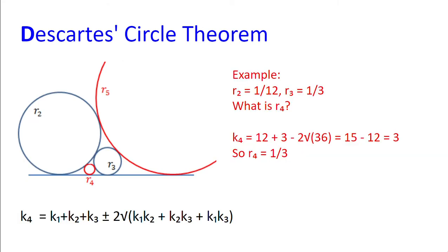So an example is, let the radius of one of the circles be a twelfth, the radius of another be a third. What is the radius of the circle R4? Well, we see the straight line, which is like a degenerate circle.